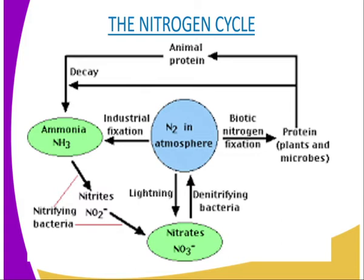These Rhizobium bacteria convert nitrogen gas into ammonia, which is then utilized by the plants to make proteins. Biological fixation is also done by free-living bacteria, including Azotobacter and Clostridium. Some algae, for example Anabaena, Chlorella, and also another algae known as Nostoc, are also able to fix free nitrogen into nitrates. These organisms fix nitrogen into ammonia, which is then converted to nitrates.